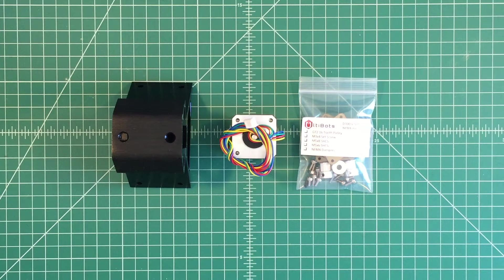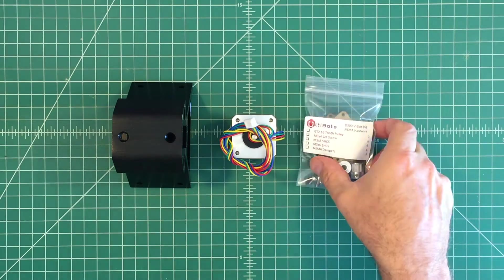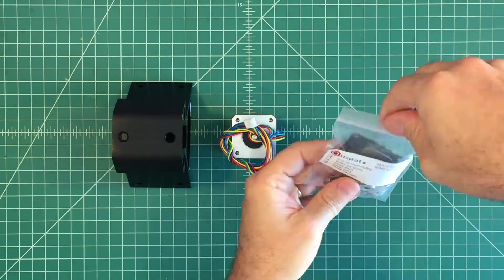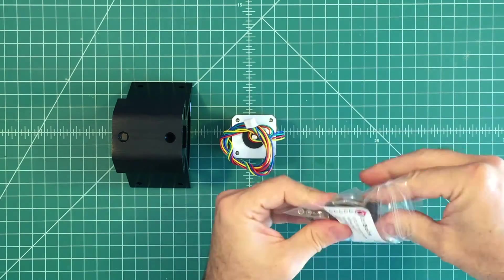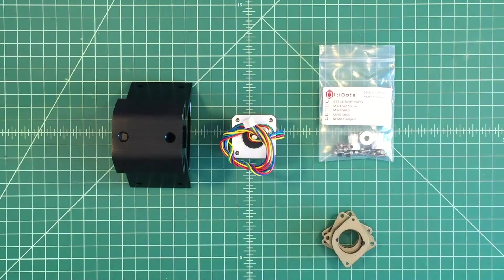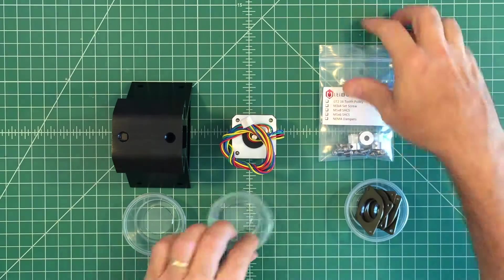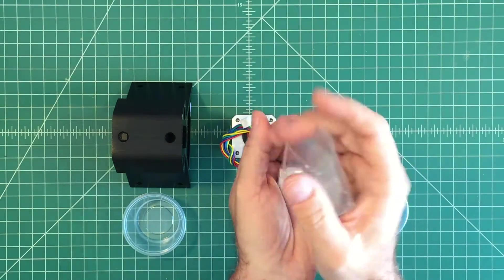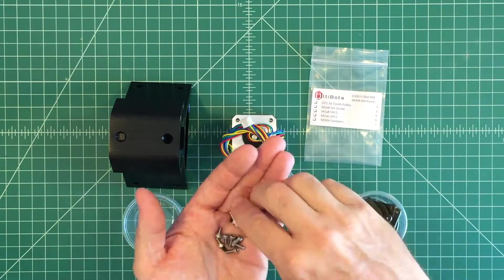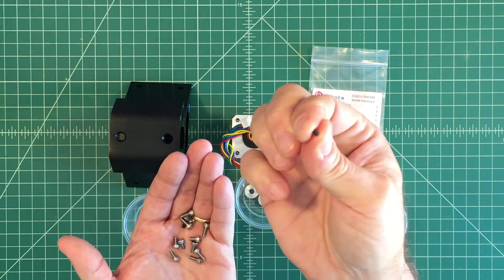Locate the frame motor mount, NEMA motor, and NEMA hardware. Start by removing the contents of the NEMA hardware bag and organize them. Some of the M3 x 4 set screws may be loose. Be careful not to lose them.